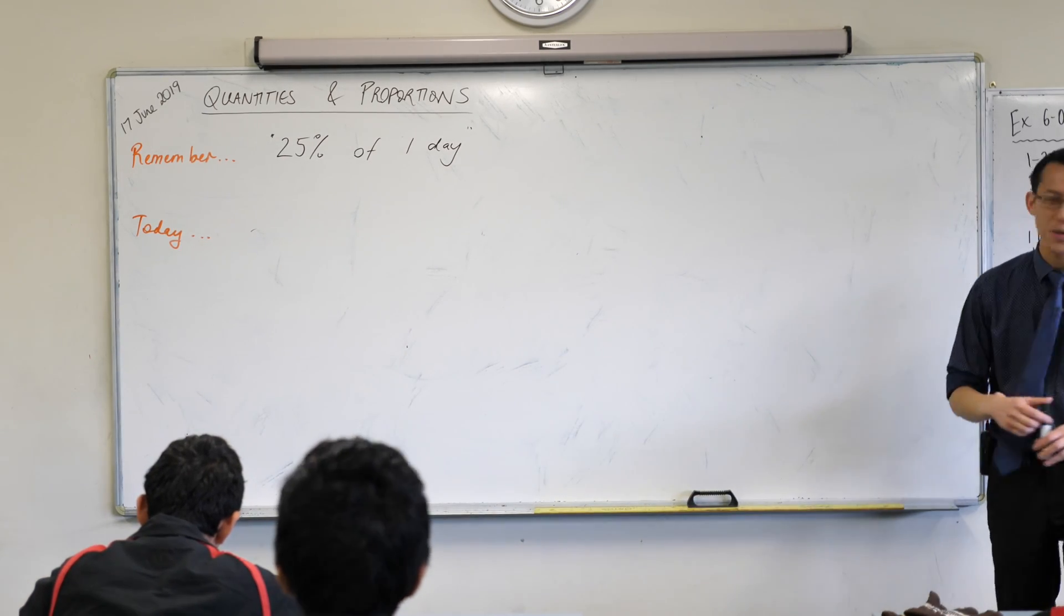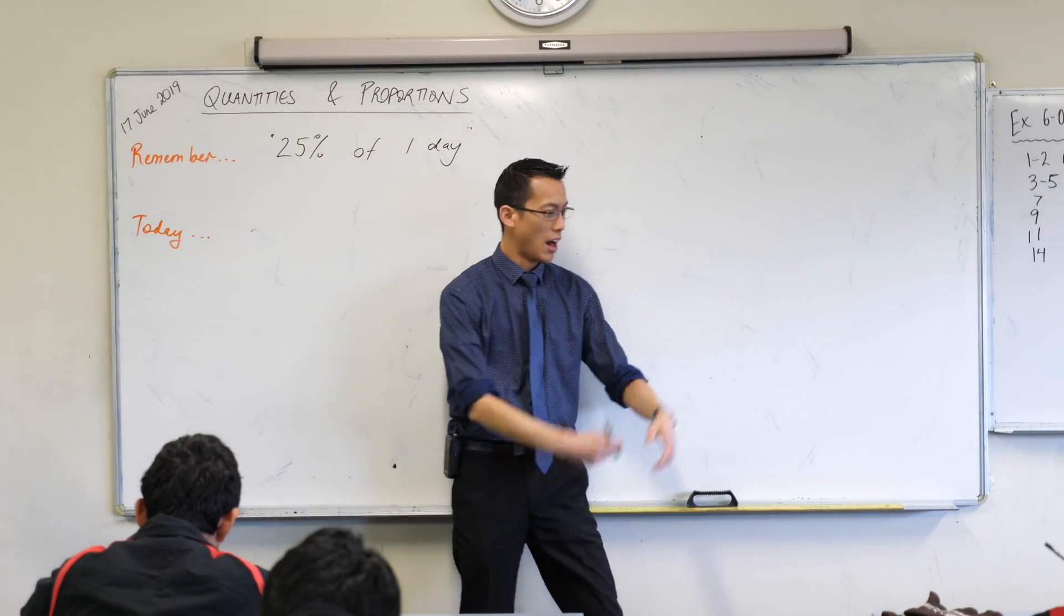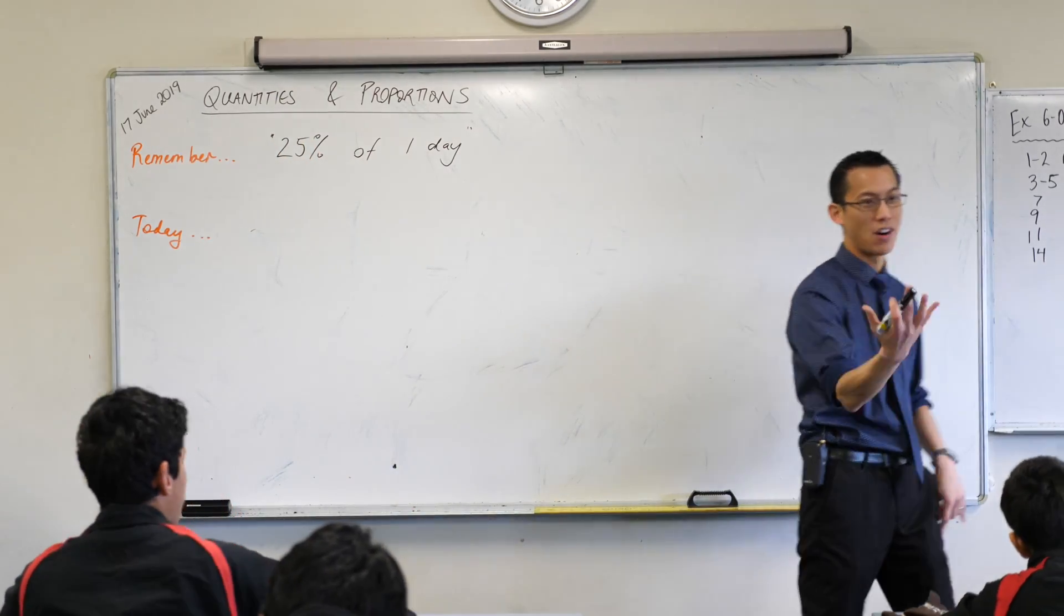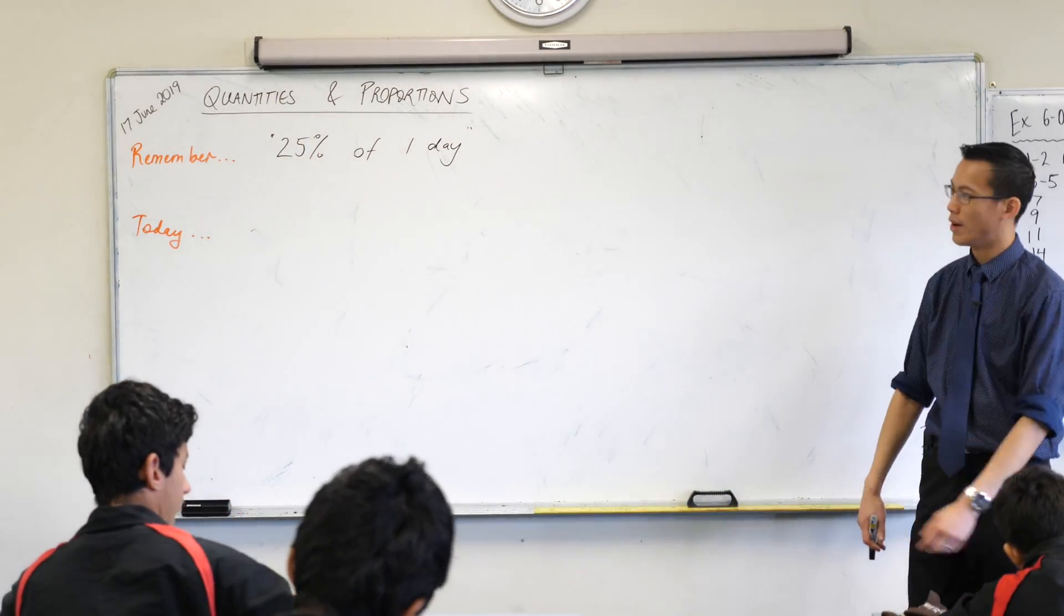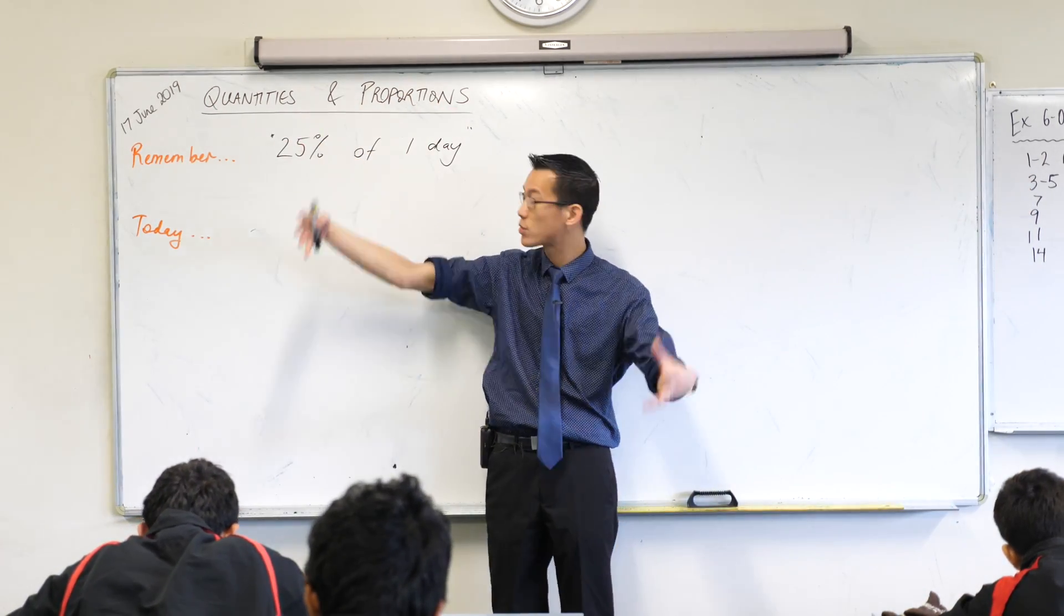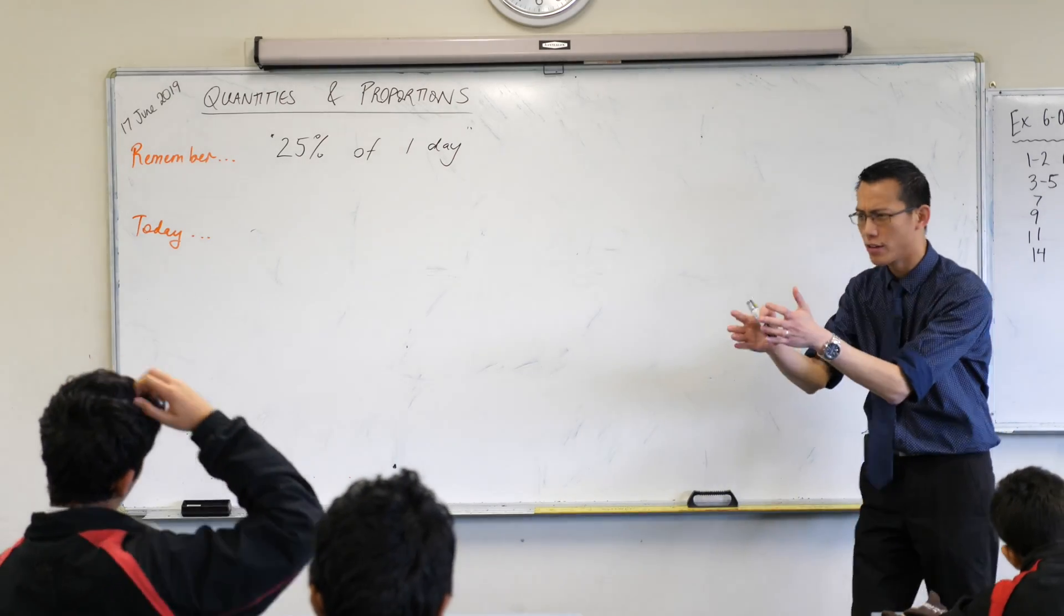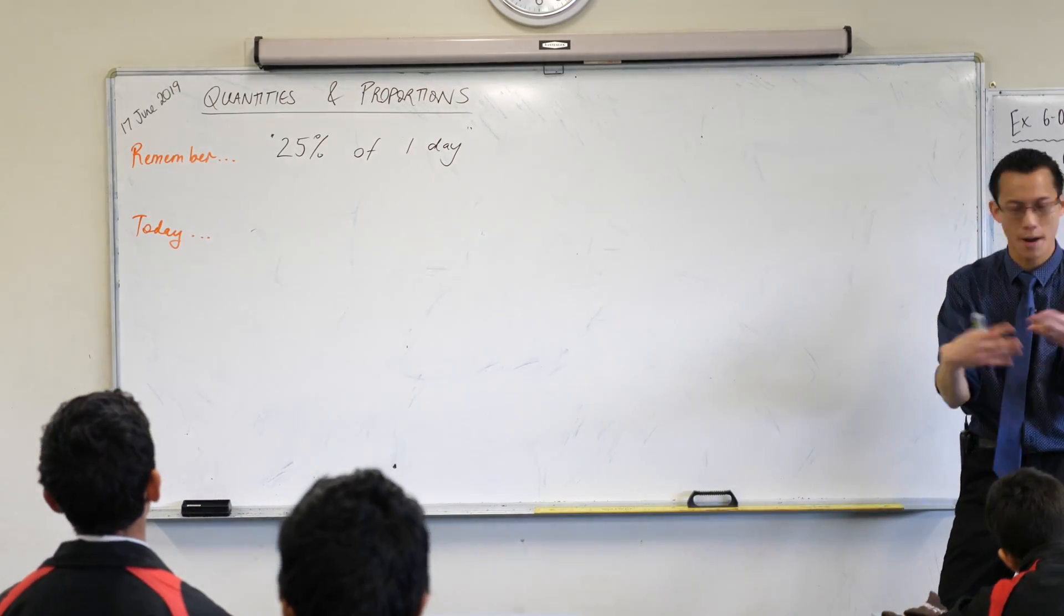So let's remember what we had to think about last time. We connected this idea of a quantity, an amount of stuff, like it might be time, or money, or how much sugar you're putting in a cup of tea. That's a quantity, an amount of stuff. And then we talked about proportions, which is, hey, take some of that. Not all of it, just take some amount of it, a proportion.